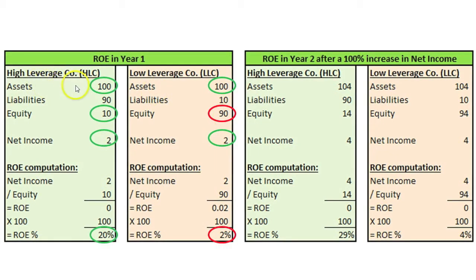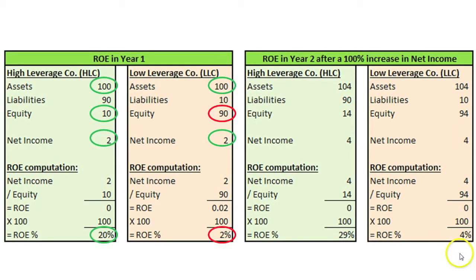HLC's management was able to generate a higher ROE for common shareholders because it borrowed an additional $90 of resources, which it used to generate profits. Leverage tends to magnify swings in the ROE ratio, both on the upside and the downside, as can be seen in the example below. Notice how HLC's ROE in year 2 of 29% is much higher than LLC's 4%, even though the management of both companies had the same amount of assets to work with and achieved the same increase in net income. The key difference is that HLC is comparing its $4 million of net income to a small investment by shareholders, while LLC is comparing its $4 million of net income to a large investment by its shareholders.